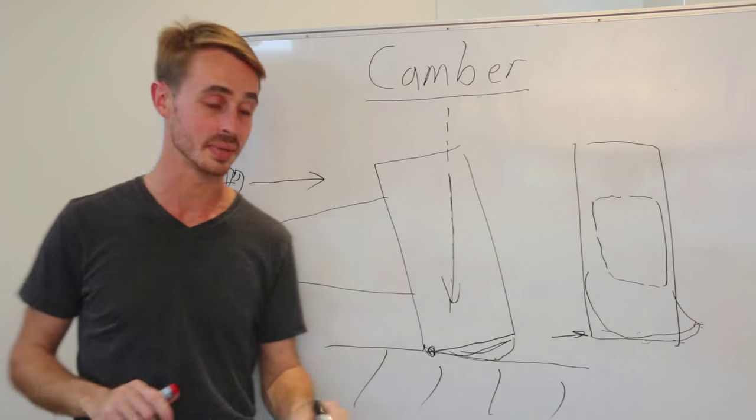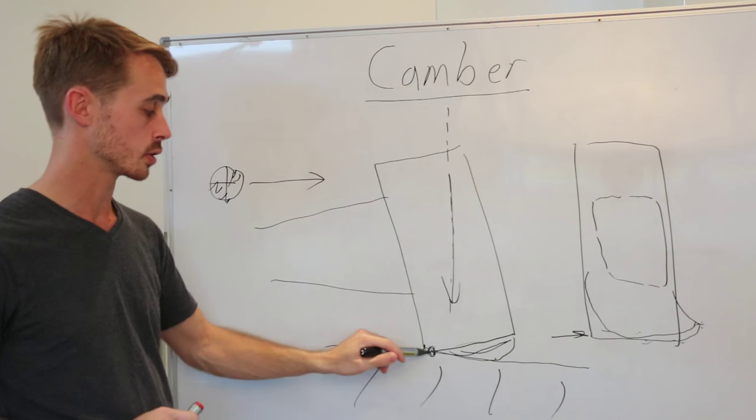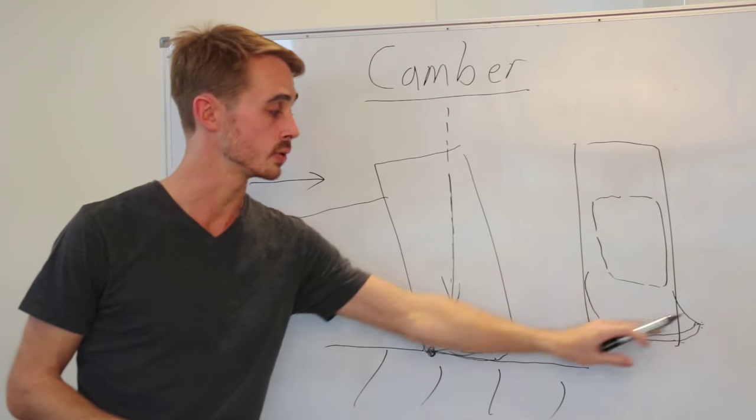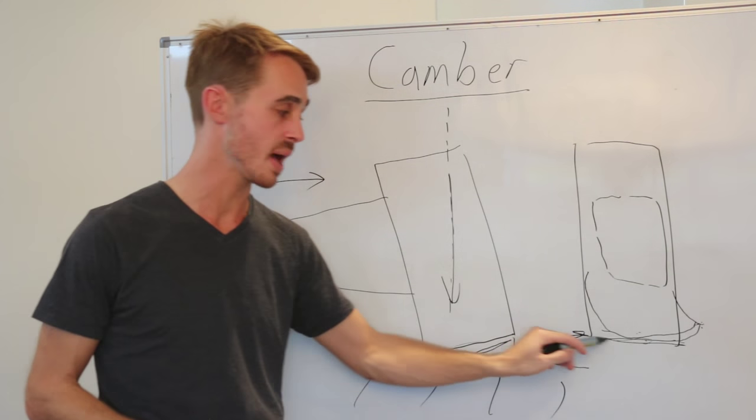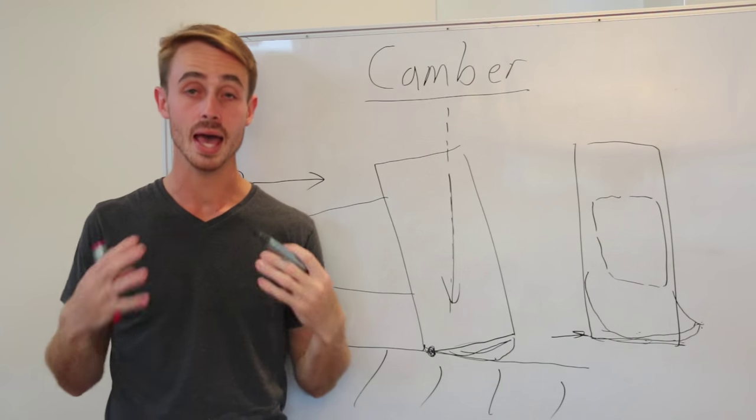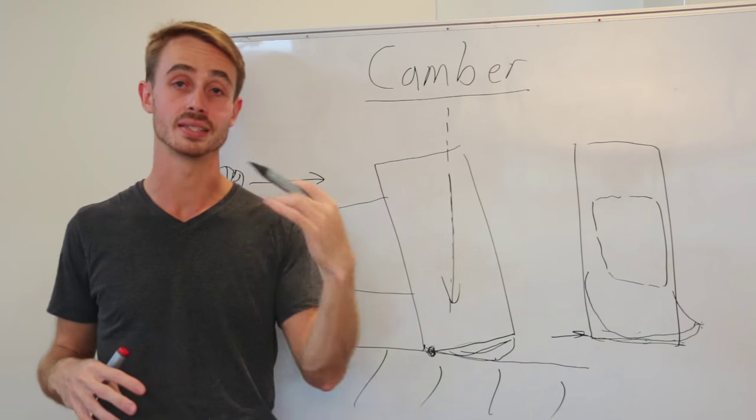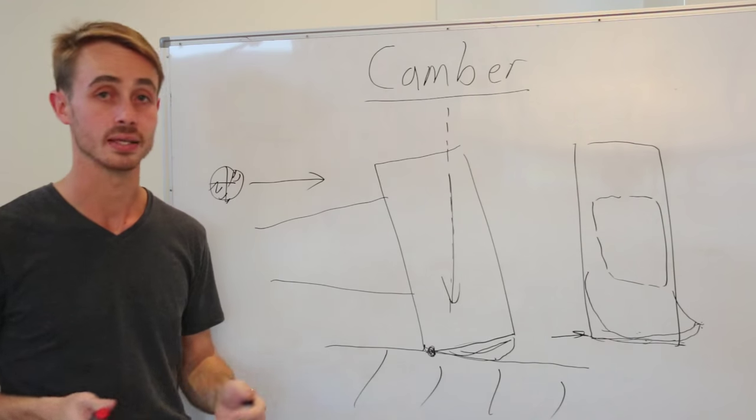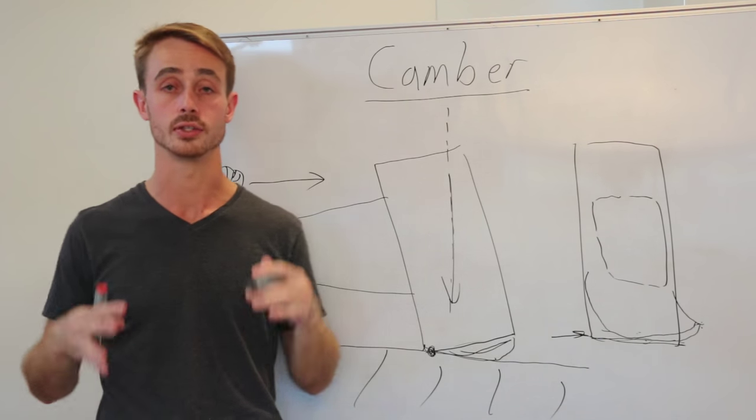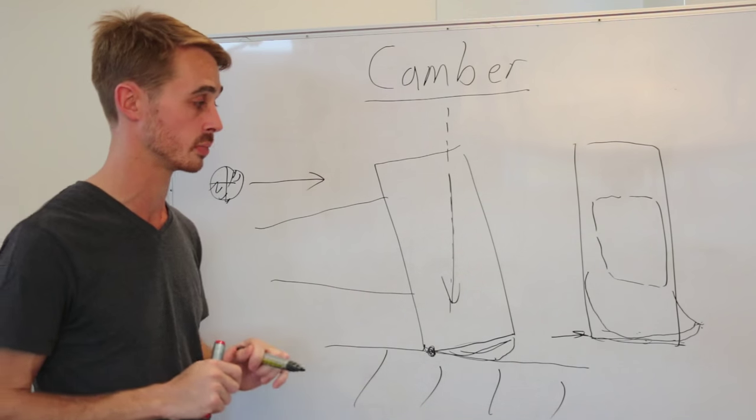Now the other problem is that when you're on a straight line, you've only got a small amount of contact patch compared to if you were running zero camber, where you've got this massive contact patch here. So the result of that is that you're going to have less straight line traction in both acceleration and in braking. So that's just something that you've got to consider. It's a compromise. Where do you draw the line? Do you want the best straight line performance or do you want the best cornering performance?